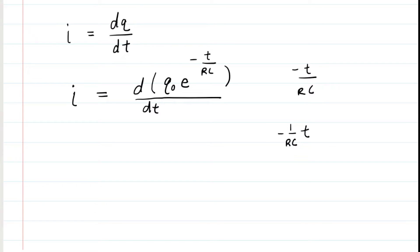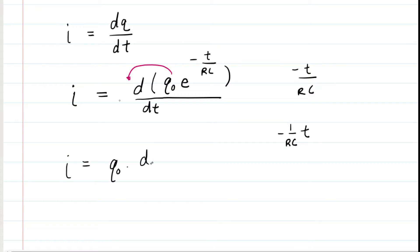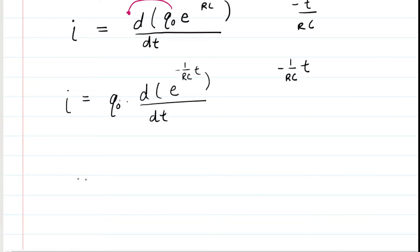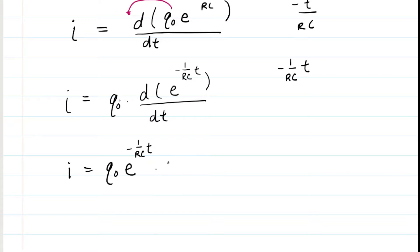Continuing the derivative: q₀ is a constant and factors outside the derivative. So we have q₀ multiplied by the derivative of e to the negative 1 over RC times t, differentiated with respect to time. By the chain rule, you rewrite the exponential term and multiply by the derivative of the power. The derivative of negative 1 over RC times t is just negative 1 over RC.